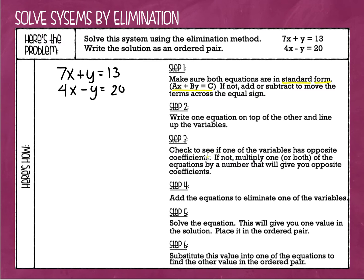Step 3: check to see if one of the variables has opposite coefficients. Coefficients are the numbers that are multiplied to a variable. Opposite coefficients are a positive and a negative of the same number — like positive 2 and negative 2, or positive 17 and negative 17. If you don't have opposite coefficients, you're going to multiply either one or both equations by a number that will give you opposite coefficients. Let's check: 7 and 4 are not opposite coefficients. But on the y's, we have a positive 1 and a negative 1 — those are opposite coefficients, so we're ready to move on.